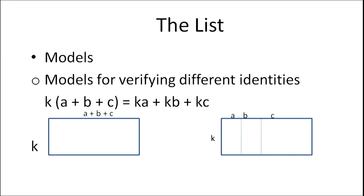We have a rectangle whose one side is a+b+c and whose other side is k. The area of this is k(a+b+c). We divide it into three parts a, b, and c. Part a has area ka, part b has area kb, and part c has area kc.